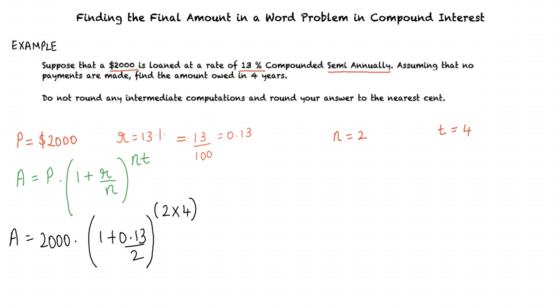Substituting in the formula, we get A equals 2000 times 1 plus 0.13 divided by 2 raised to the power 2 times 4, which equals 3309.9913.